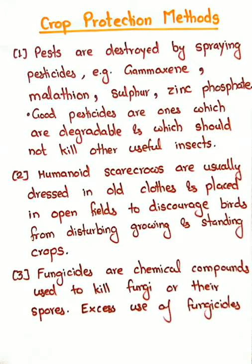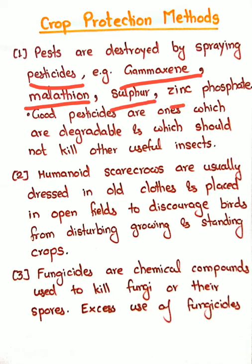Now, crop protection methods — how do we save these crops? Pests are destroyed by spraying pesticides. Pesticides are chemical compounds used to kill pests. For example, gamma-BHC, Malathion, Sulfur, and Zinc Phosphate. These are some examples of pesticides used against pests.